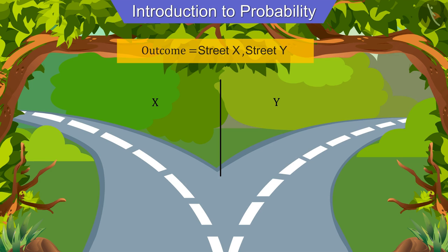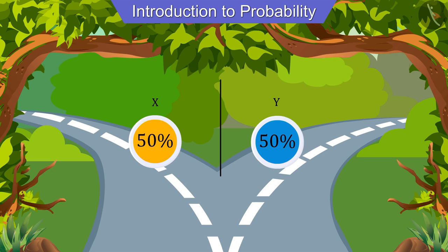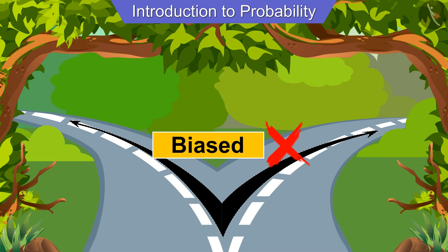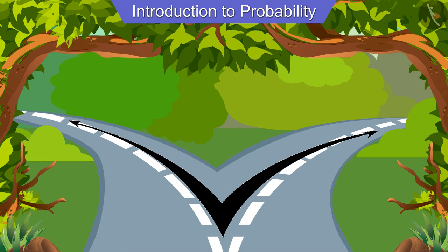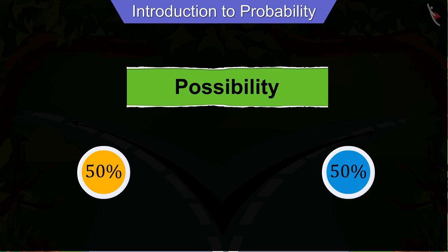As Joseph is not able to find any signboard on the road, we can say that the possibility of either road being the right one is 50 percent. We made such a prediction because we don't know which of these two roads is the right one. Therefore we cannot be biased towards any of the two roads, and hence the possibility of either road being the right one has been assumed to be 50 percent.